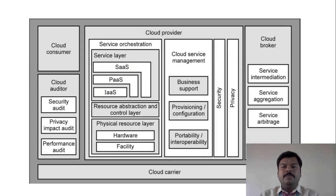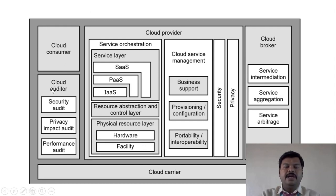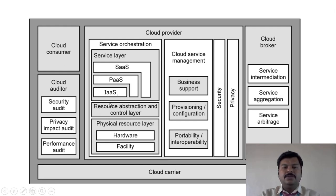The NIST cloud computing reference architecture consists of five components, also called five building blocks. The first component is the cloud consumer, visible at the top-left. Next is the cloud auditor, which performs security audits, privacy impact audits, and performance audits. Then comes the cloud provider, which contains the service layers: IaaS, PaaS, and SaaS. Next to the service layers is the resource abstraction and control layer, followed by the physical resource layer.